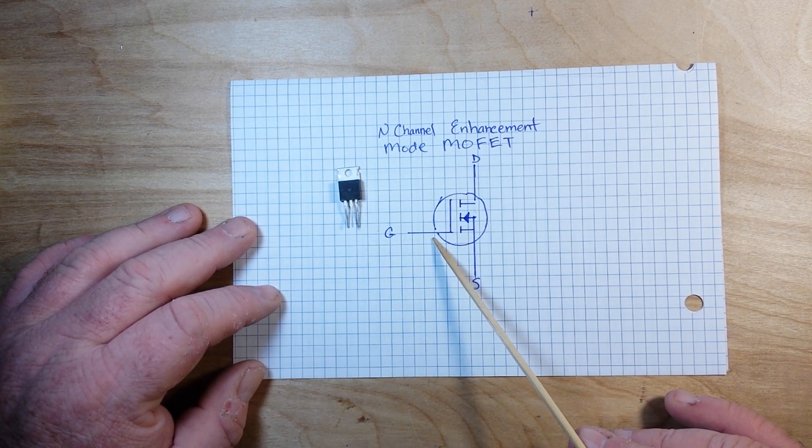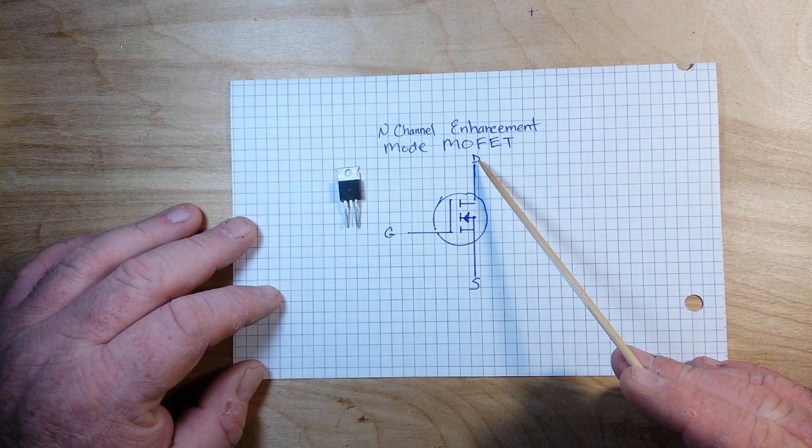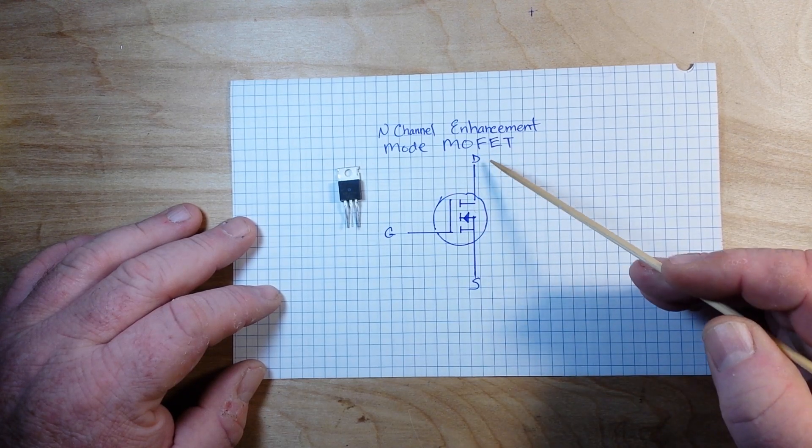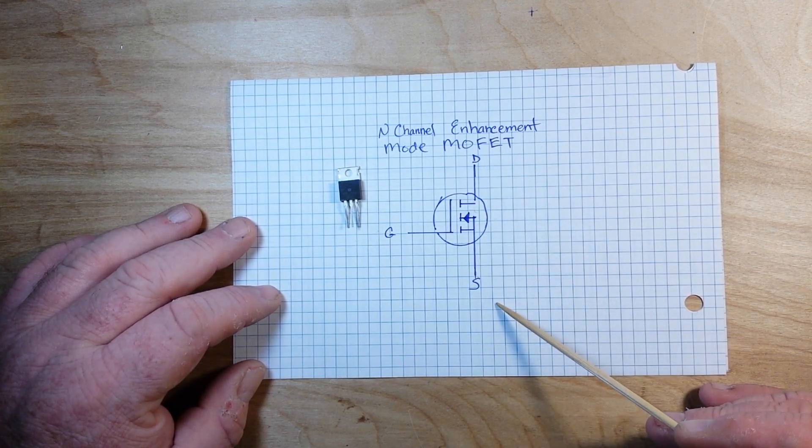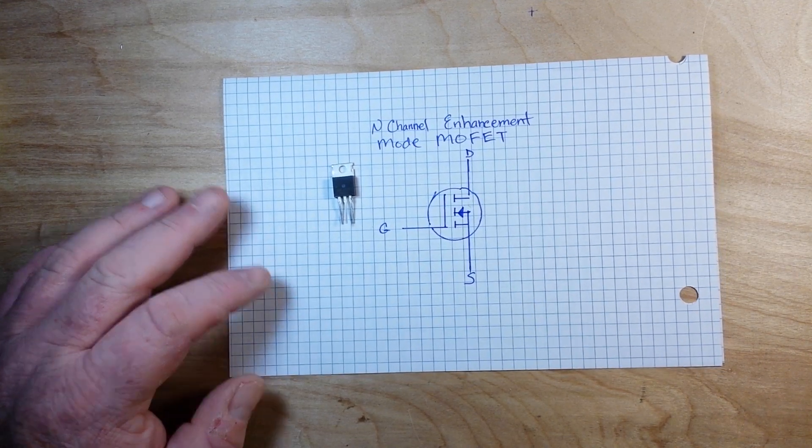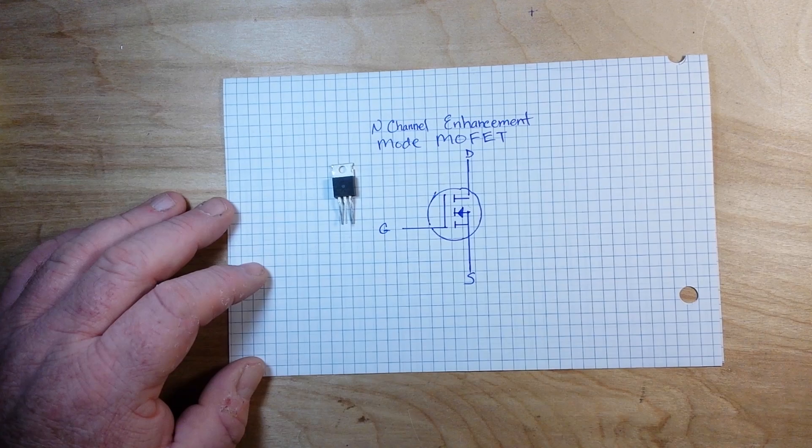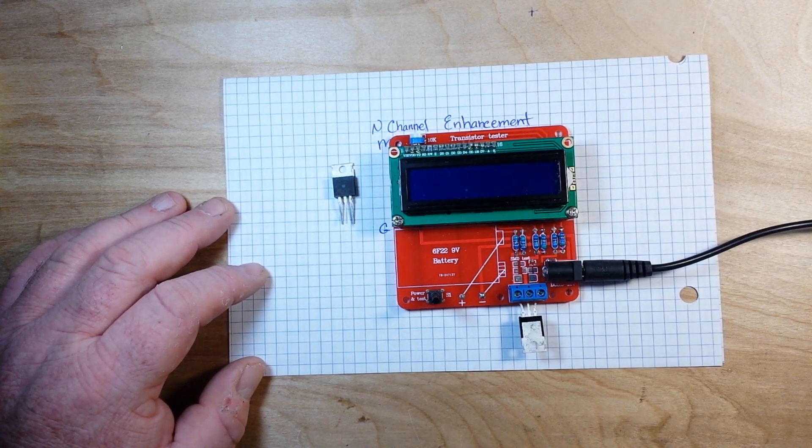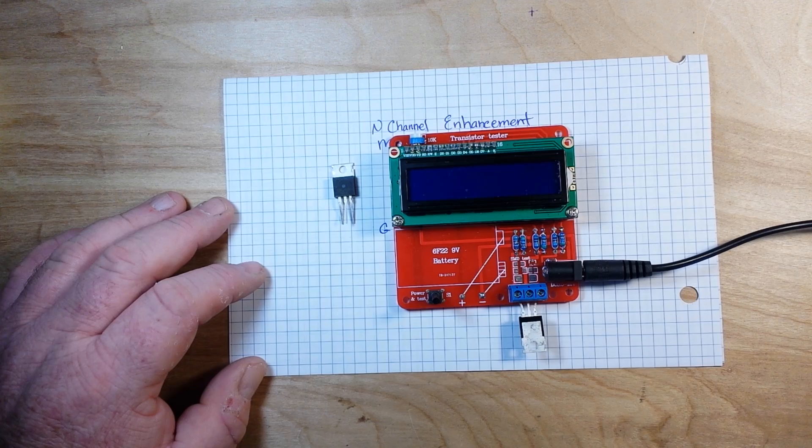When a voltage is applied at the gate, it opens up a path for current to flow from drain to source. So that's basically how it works. Now we've seen this device in numerous videos before.